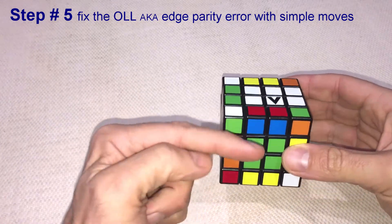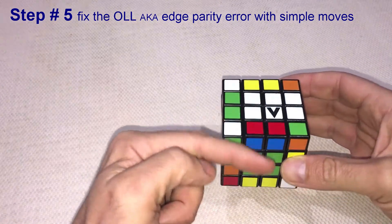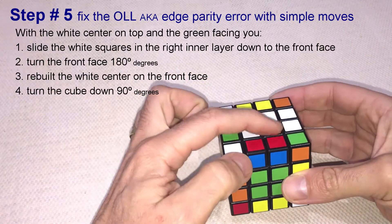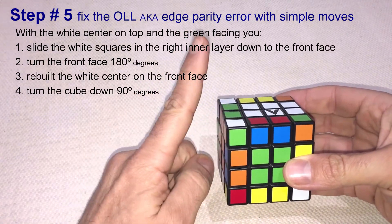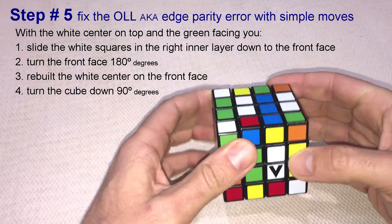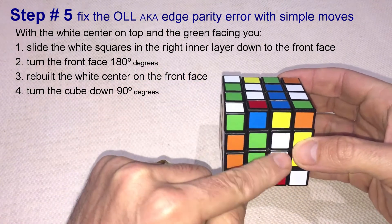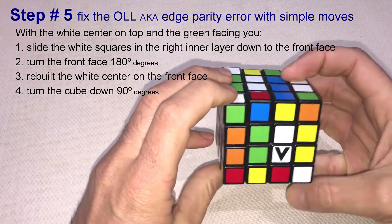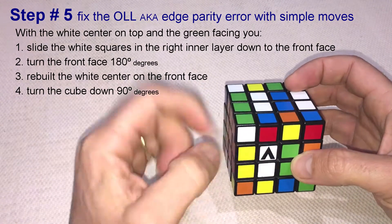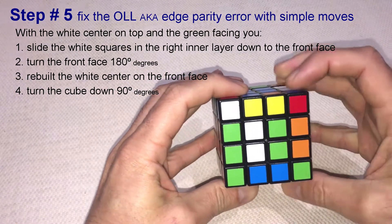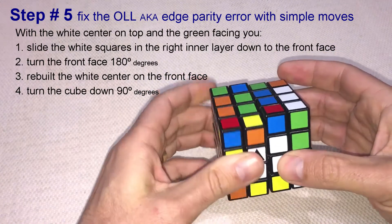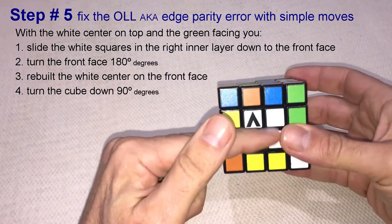With the white center on top and the green facing you, turn the right inner layer down 90 degrees. Move the white squares to the left inner layer. Slide the white squares on top down to the front and move them to the right inner layer. Bring back the blue squares on bottom and fix the blue center. Bring back the white squares on bottom to fix the white center.